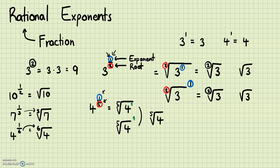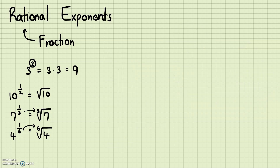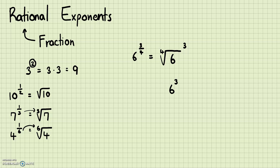Now let's look at some cases when the numerator is not 1. Let's look at 6 to the power of 3/4. The fourth root is still going to be there, but we also have the power of 3. So you can either take the fourth root first and then raise that to the power of 3, or you can raise 6 to the third power first and then do the fourth root. Either way is fine — you can do the exponent first and then the root, or the root first and then the exponent.